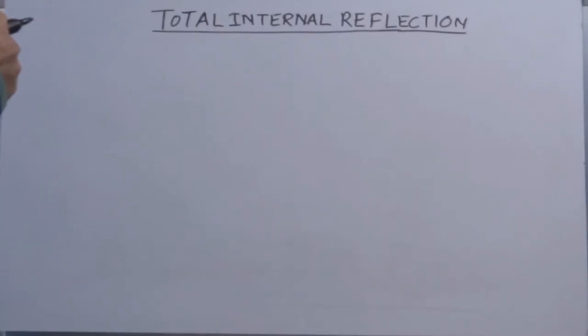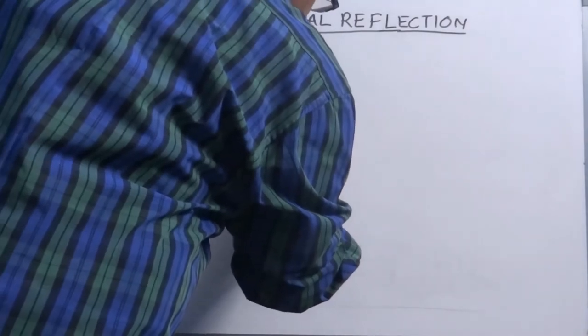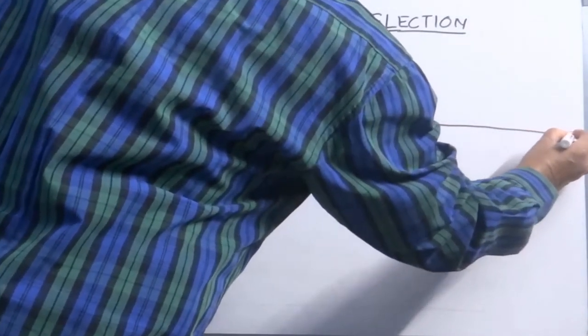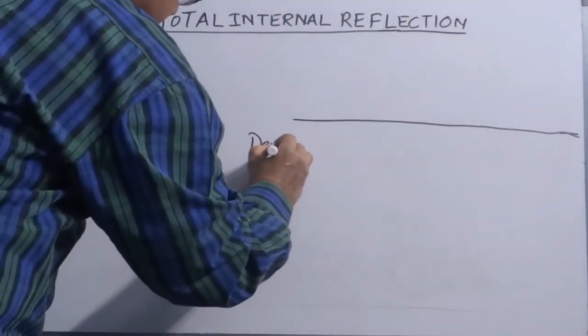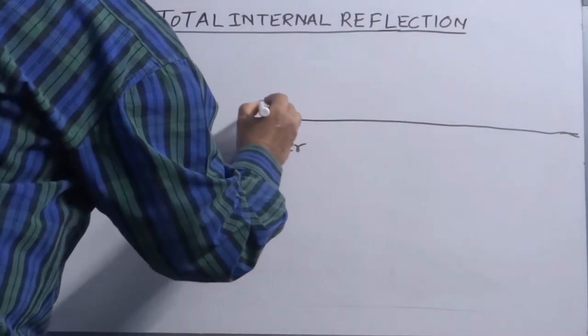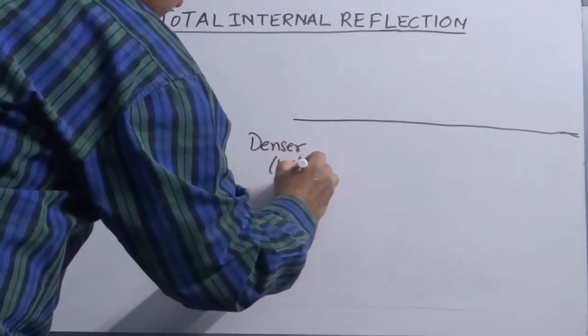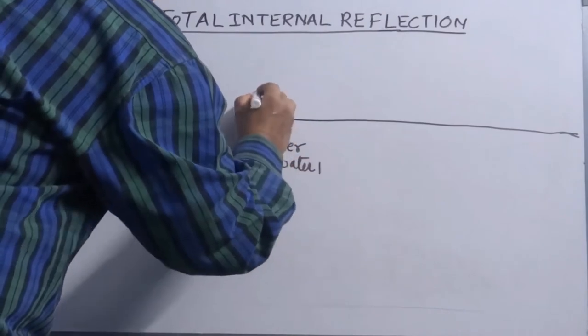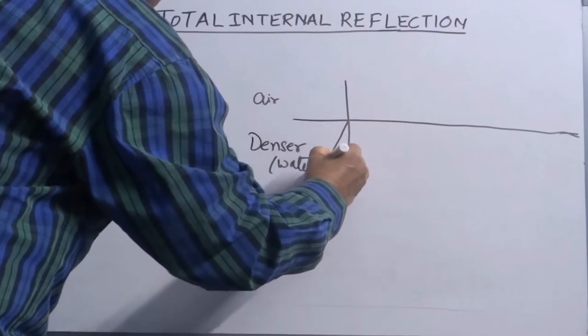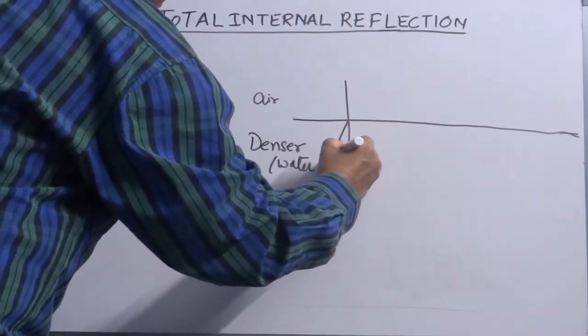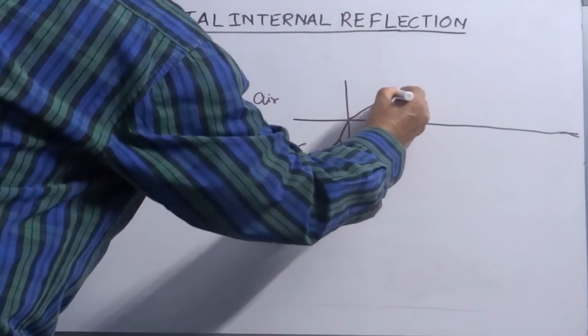Let us talk about total internal reflection. Consider a boundary or interface of two mediums — one is denser, say water or any other denser medium, and another is air. When the ray of light is incident from the denser medium, it bends away from the normal.